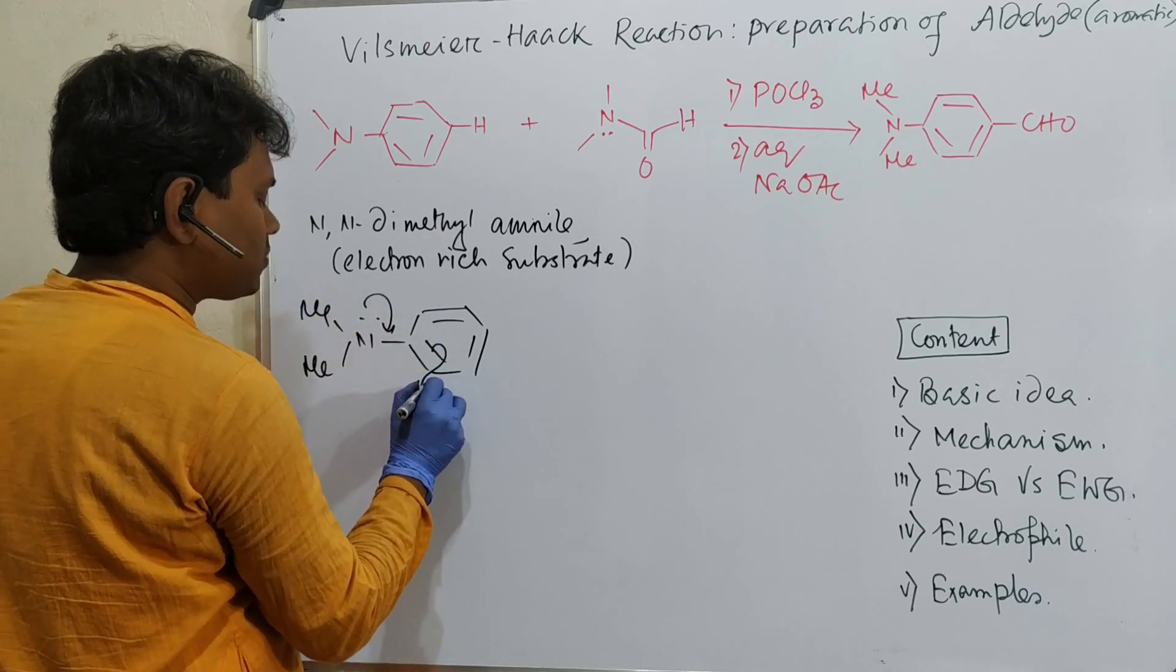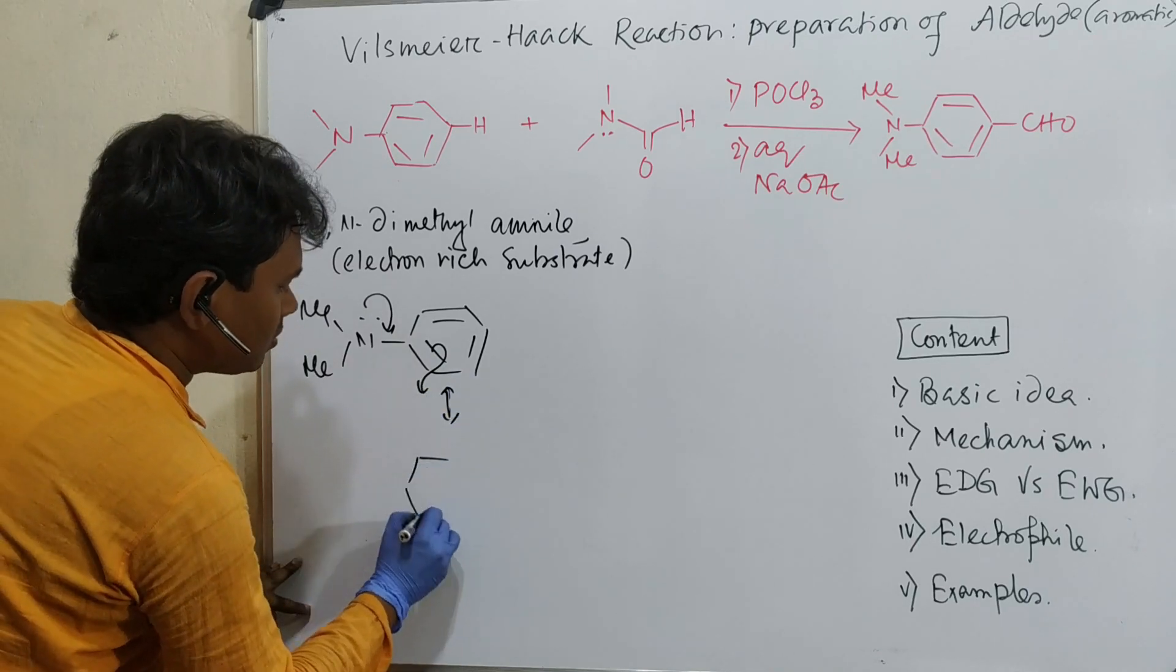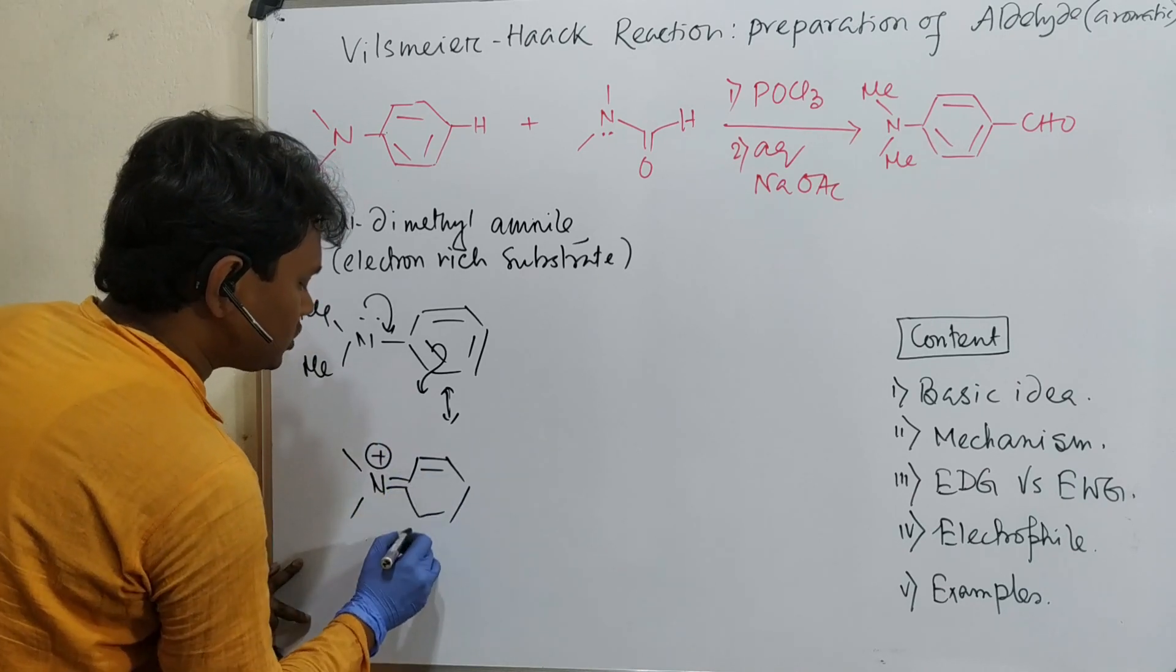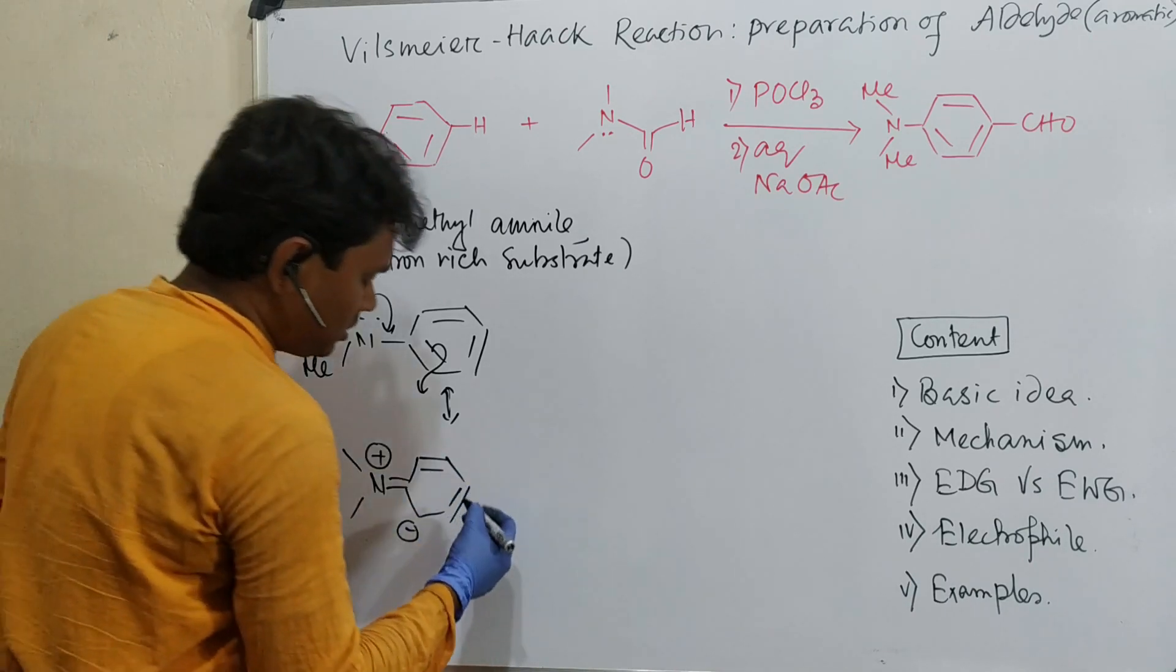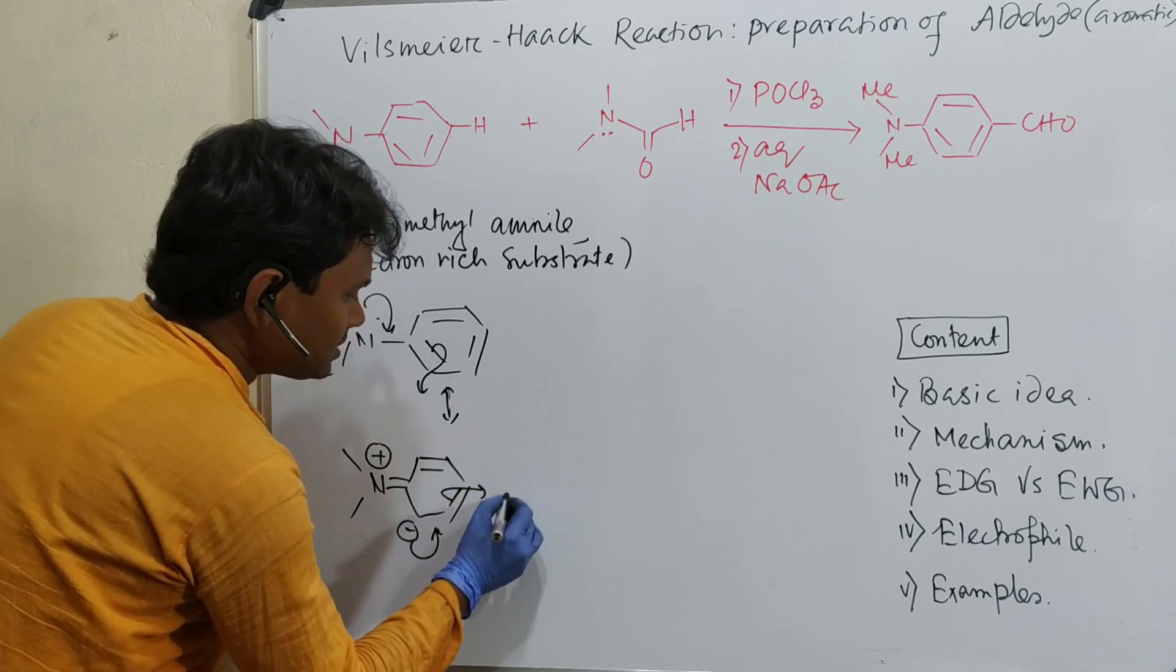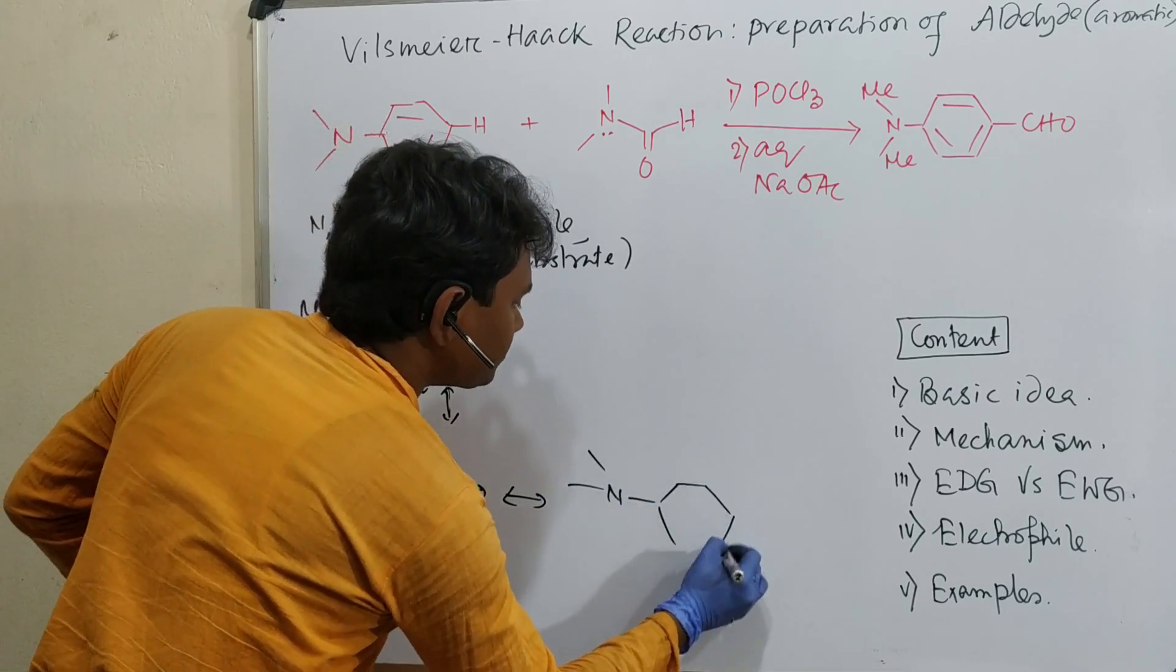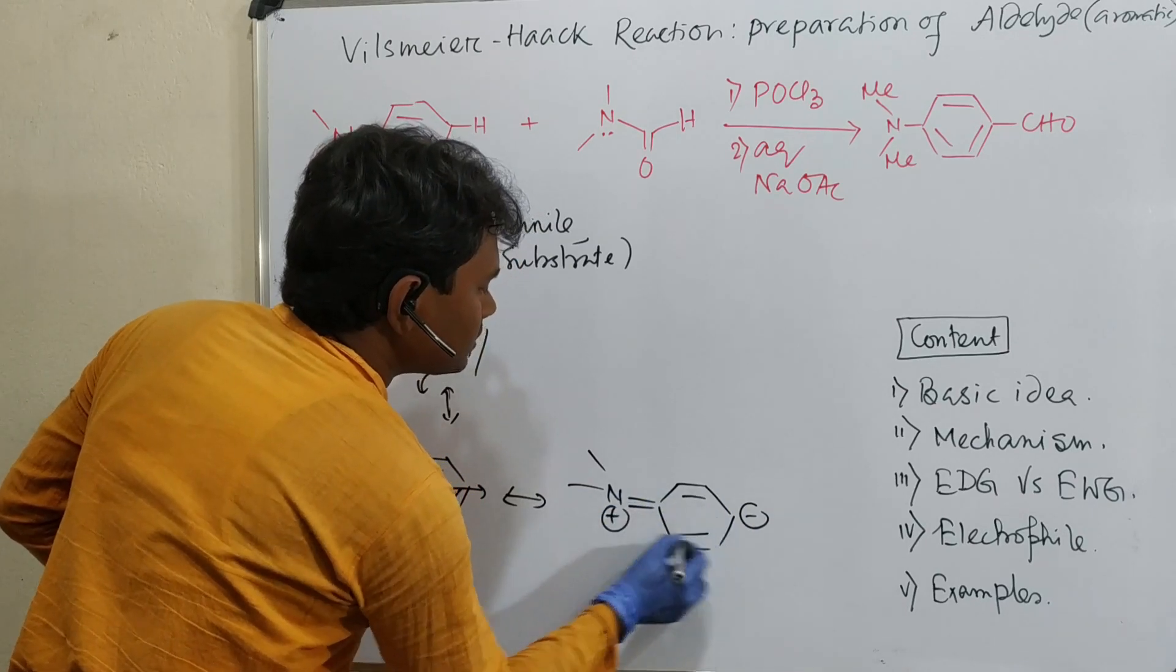If you see its canonical forms, the nitrogen can donate its electron pairs. One canonical form has the negative charge at ortho position, and nitrogen is capable of holding the positive charge efficiently because of its moderate electronegativity.